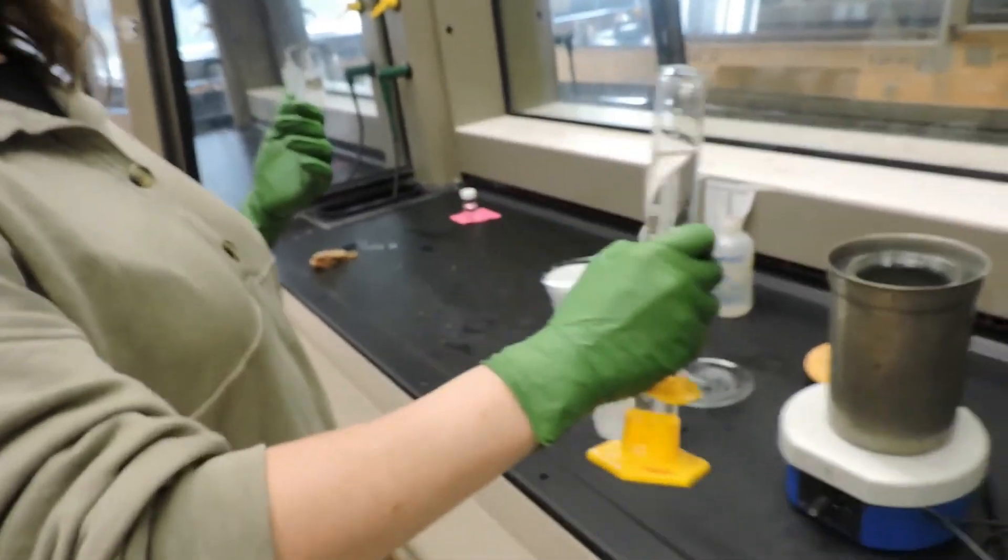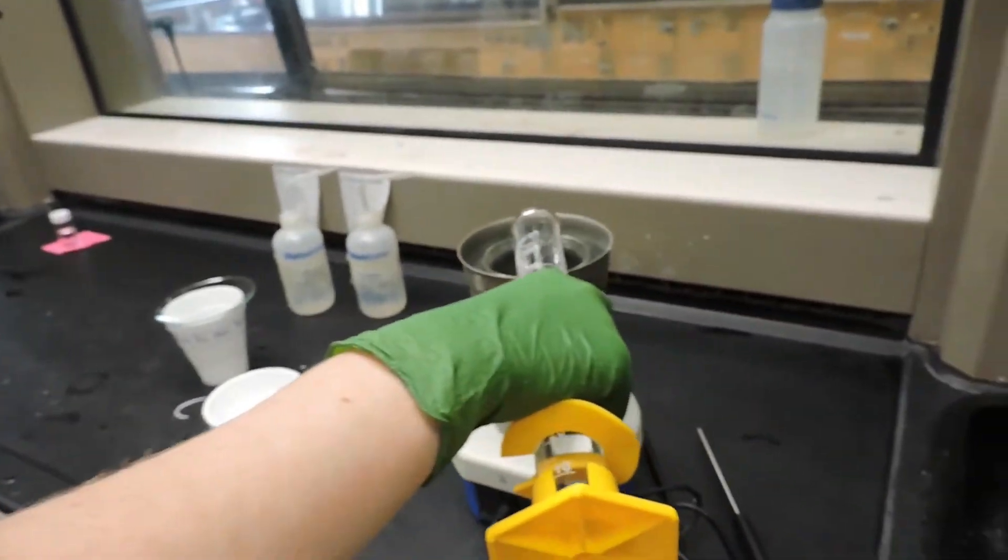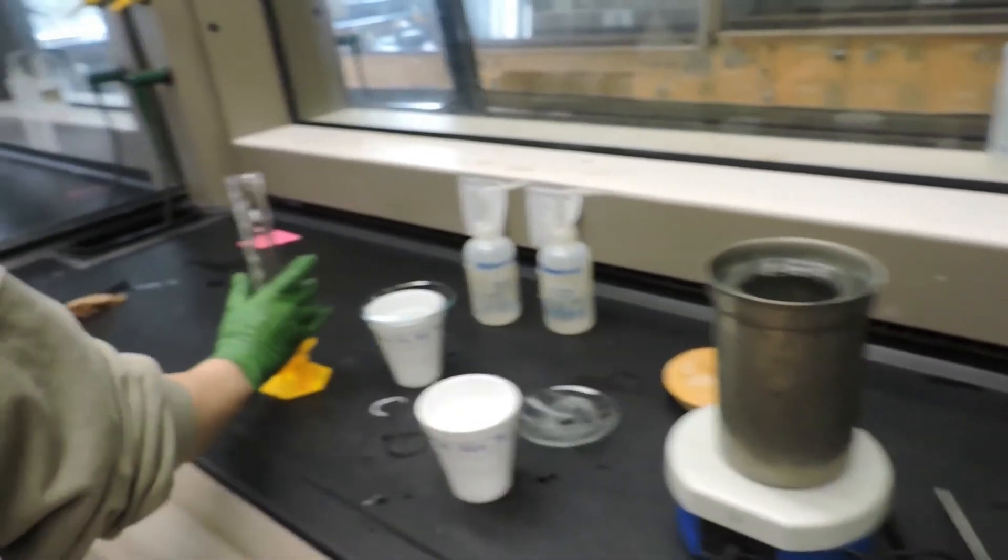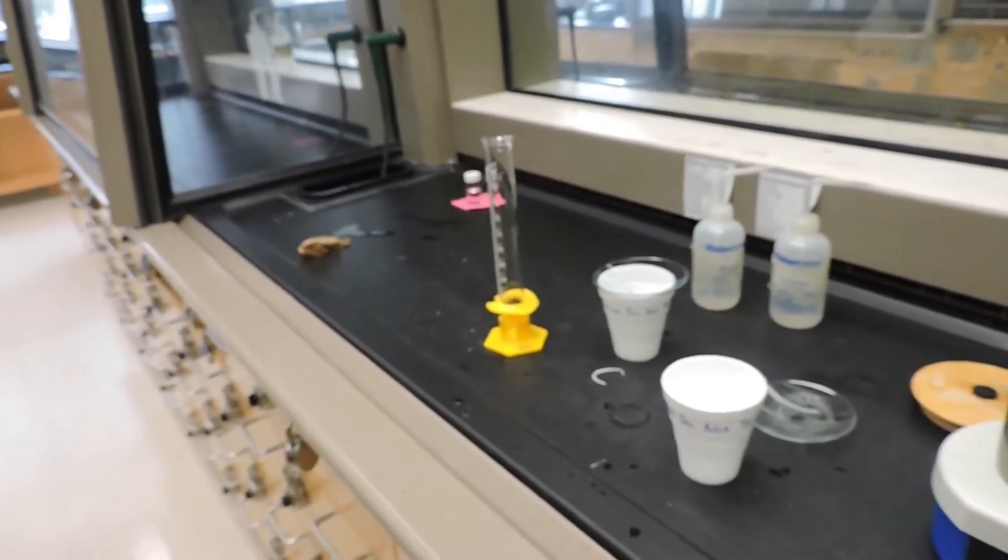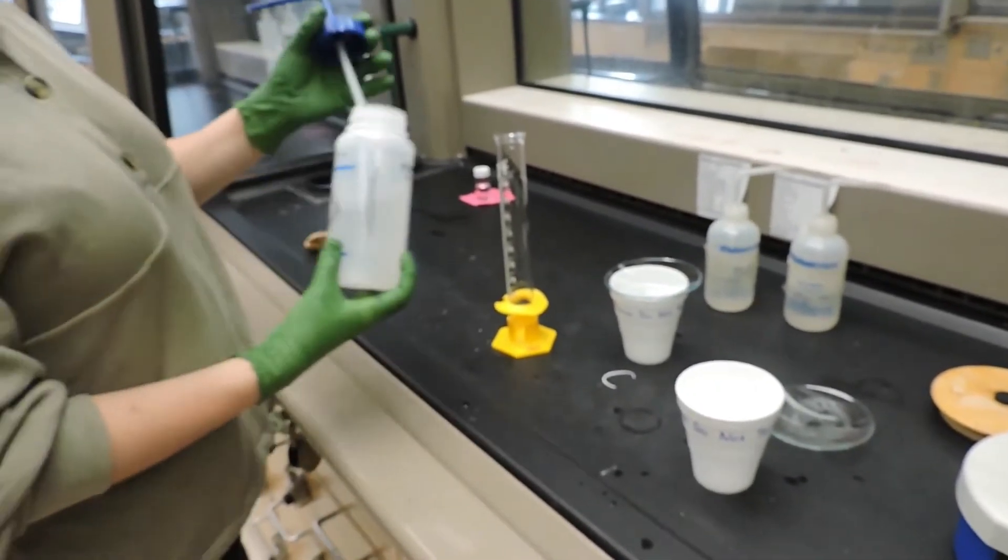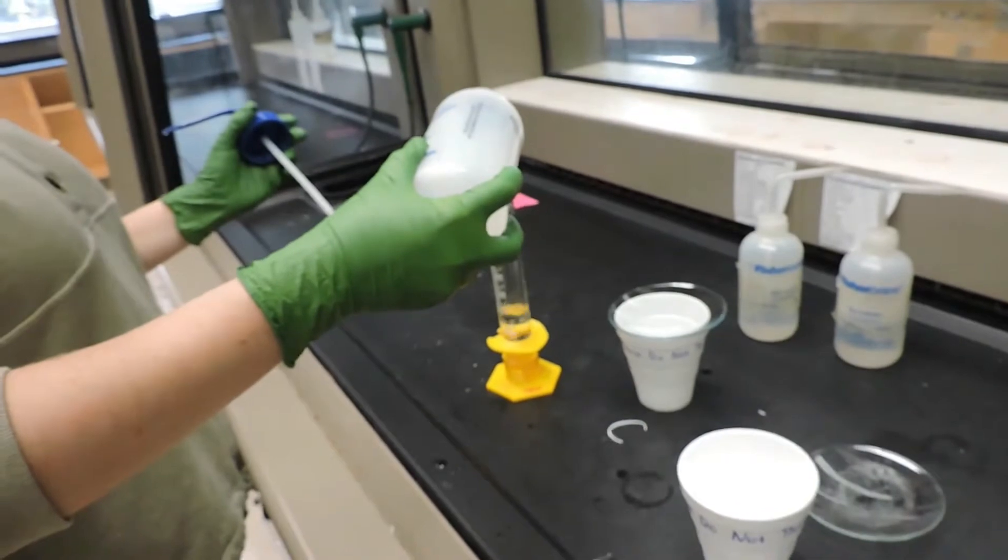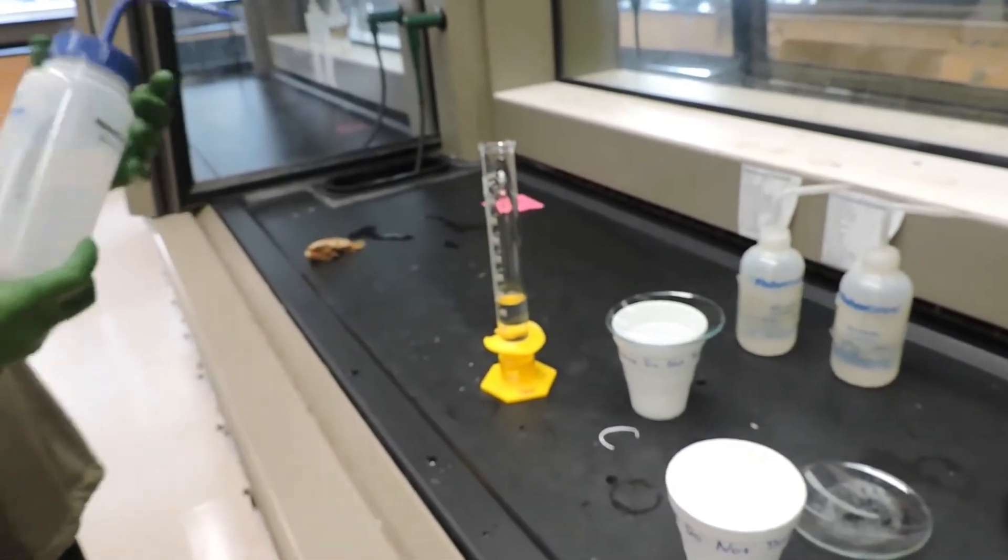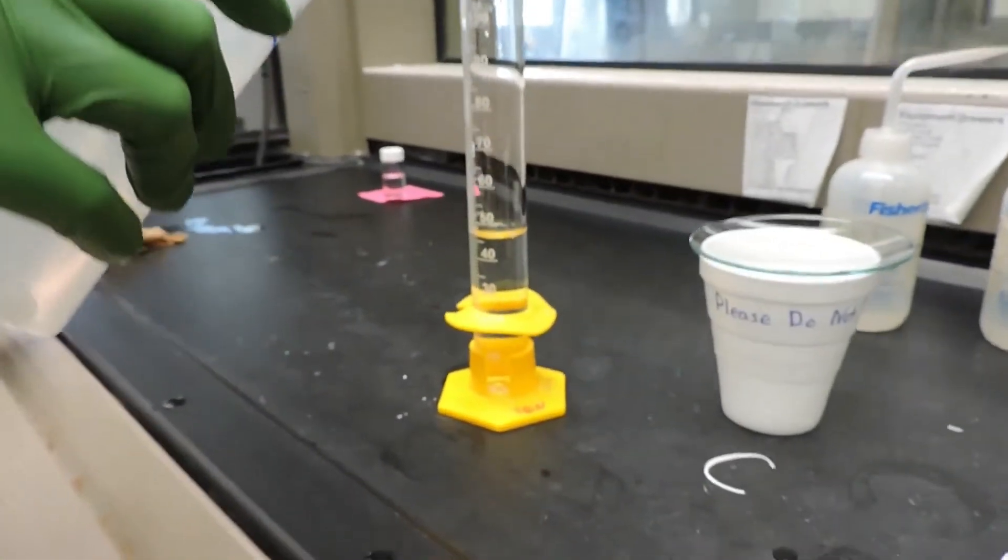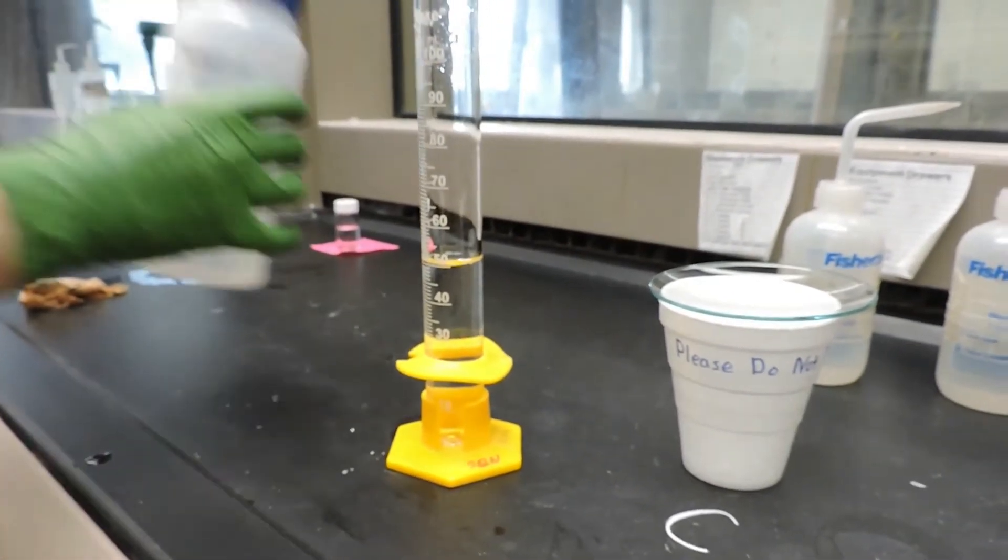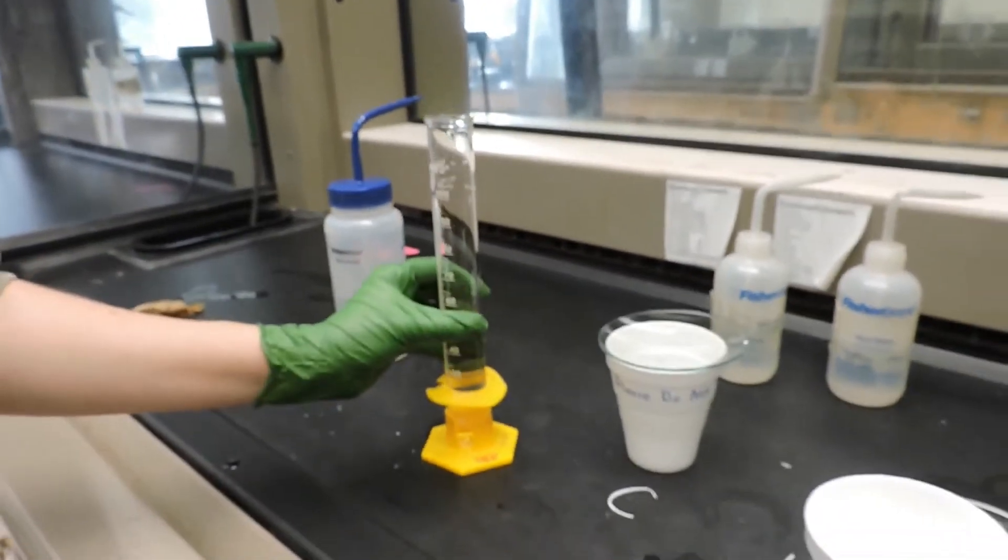We'll carefully measure 150 milliliters of deionized water using a 100 milliliter graduated cylinder. So that was 100 mils, and now we'll add an additional 50 milliliters. It's all about the meniscus.